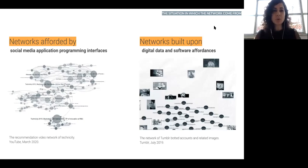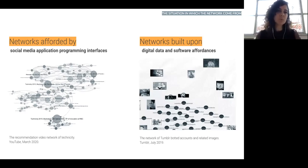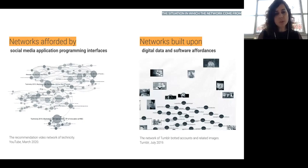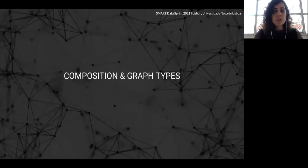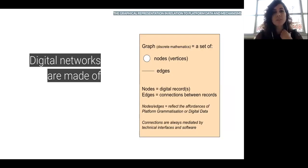On the right side you see a network that was built upon bot accounts — it was not ready-made by Instagram, we had to build it. On the left side you see a network afforded by YouTube — this is the video network of technicity. We also need to think about the composition and graph types that help us understand what we are reading.